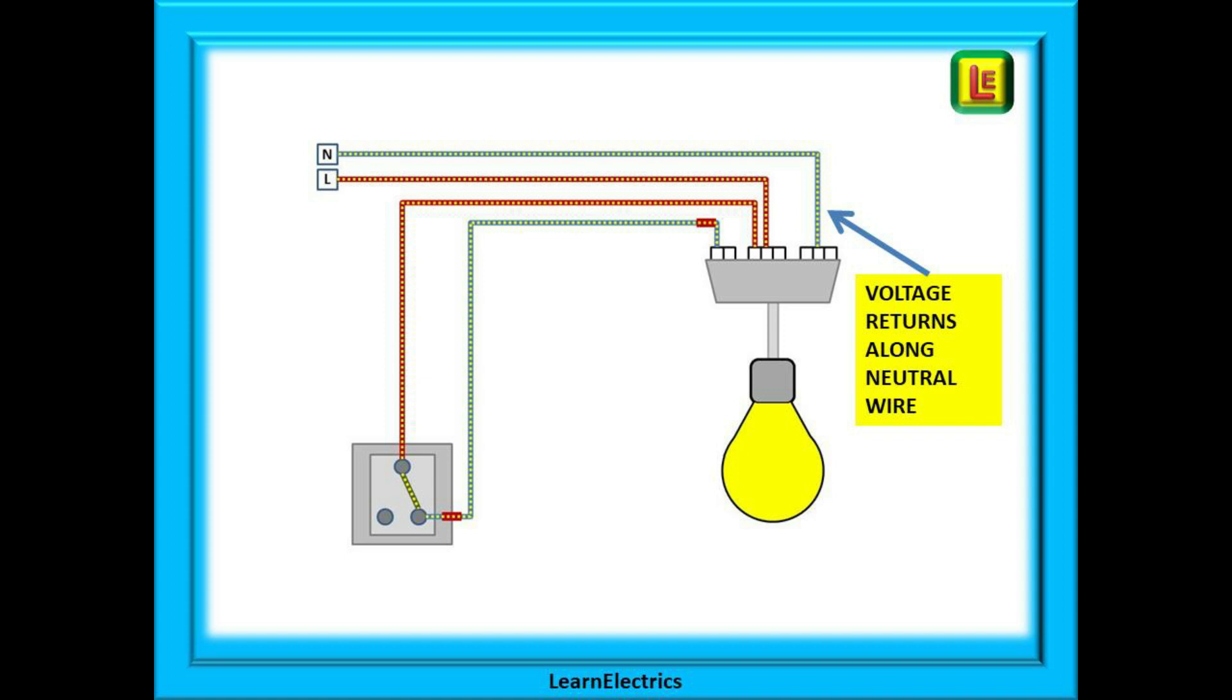Voltage flows through the lamp and returns to the consumer unit along the neutral conductor. Because the electricity can now complete its full journey, the lamp will light up. The lamp will be on.